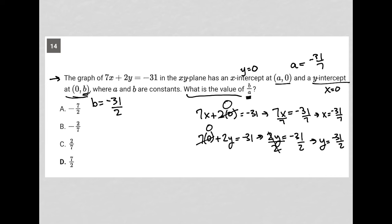The question says, what is the value of b over a? Well, b over a would be negative 31 over 2 over negative 31 over 7. Whenever I have a complex fraction like that, I like to write them horizontally: negative 31 over 2 divided by negative 31 over 7.